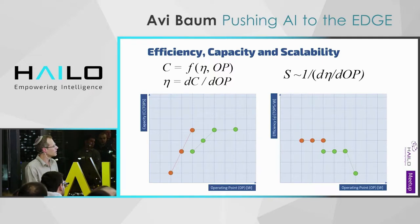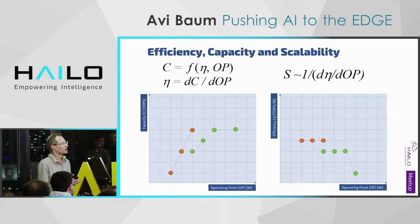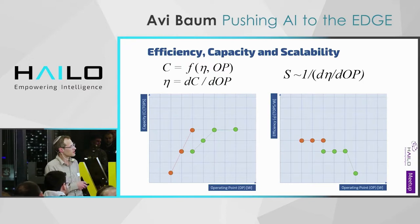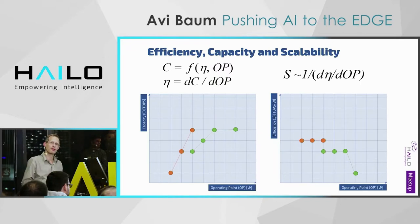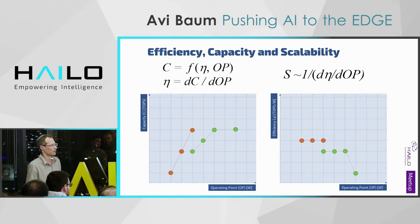The scalability factor looks at how efficiency changes over the operational point. In the most scalable case, efficiency is static across all operational points. When scalability drops, it's hard to scale — for example, the green case cannot scale from one operational point to another. Efficiency and scalability are the most fundamental metrics for evaluating the suitability of an architecture for edge devices.